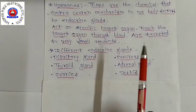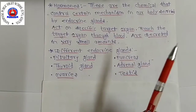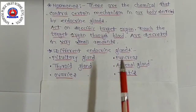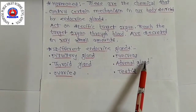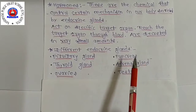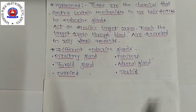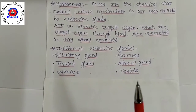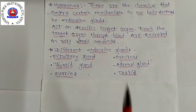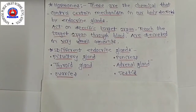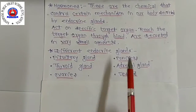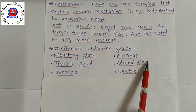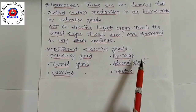Adrenal glands are often called the glands of emergency because they respond during emotional situations, and the body's emotional feelings can be triggered by this hormone.